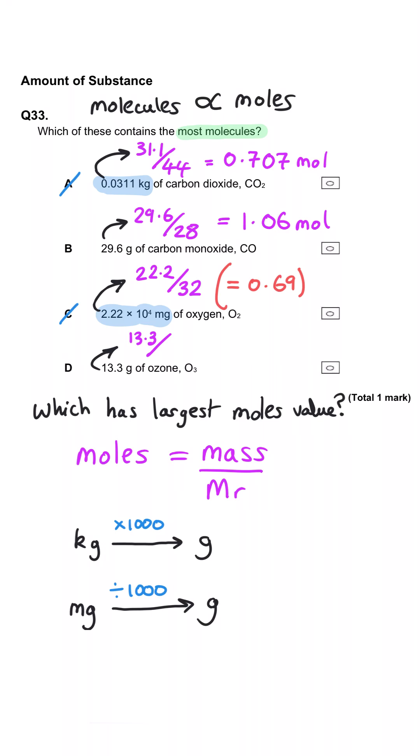And then for D, we see that we've got 13.3 grams of ozone, which we divide by its MR, which is 48. And again, we can see from the fraction it's going to be less than 1, so we don't really need to calculate this one either. And we can see that B is the correct answer because it has got the largest number of moles, and therefore the largest number of molecules.